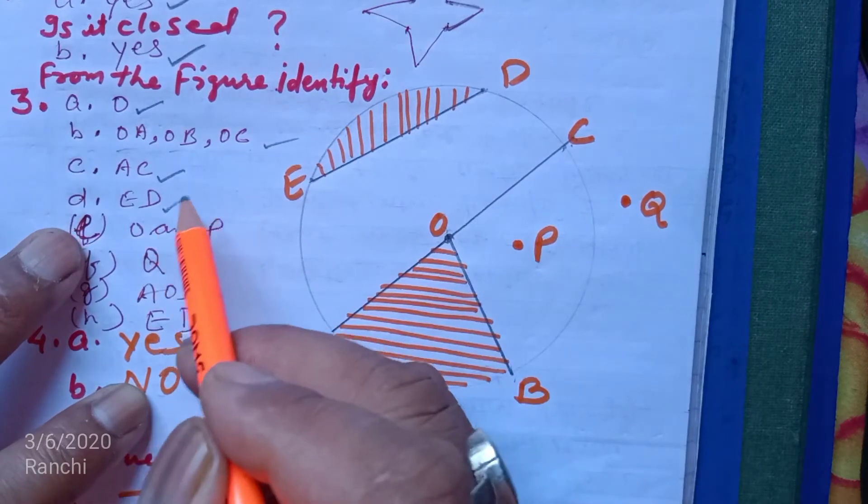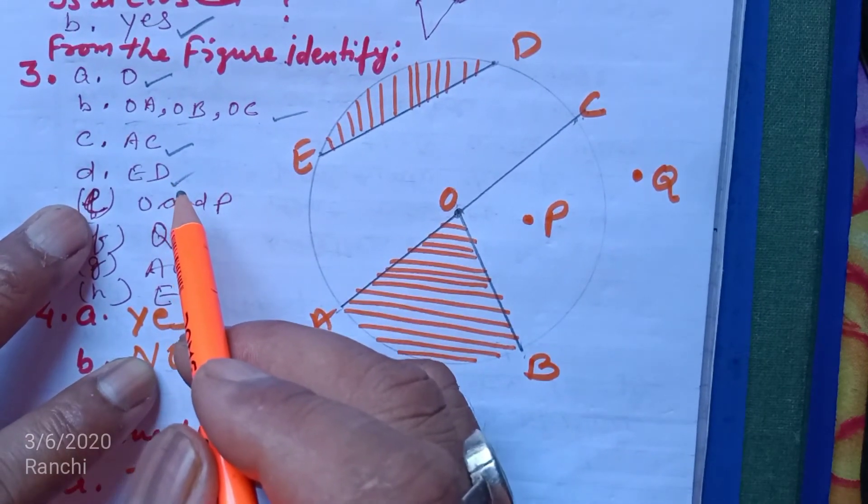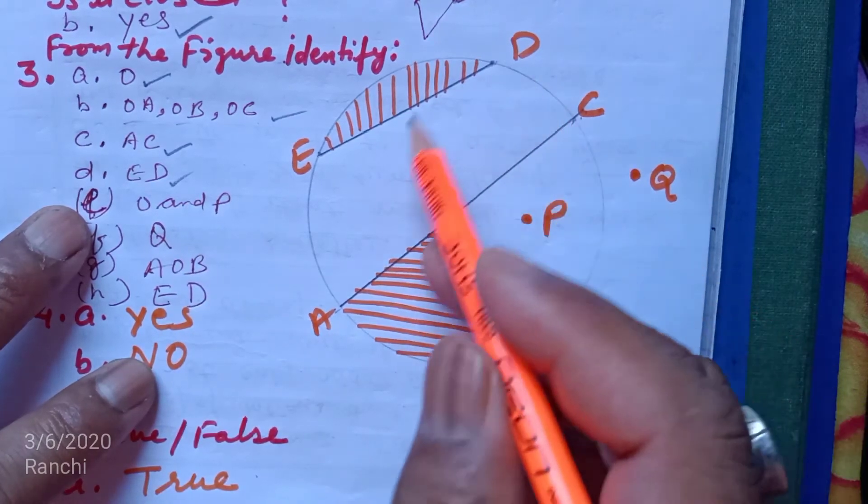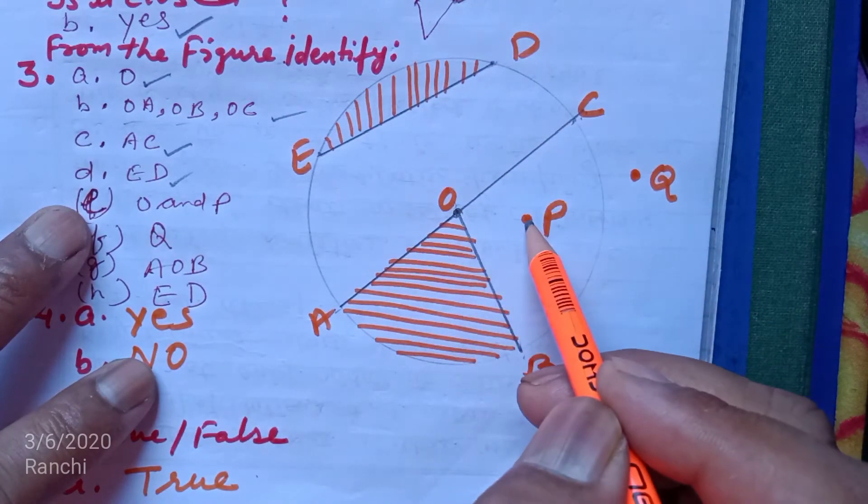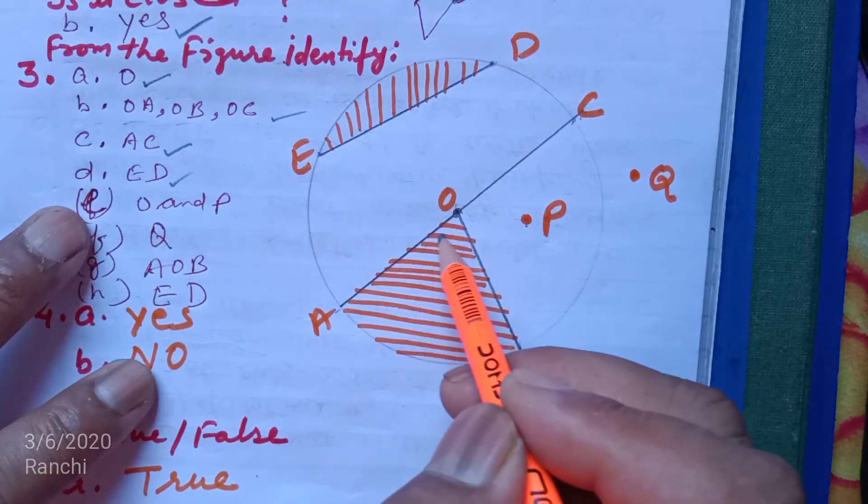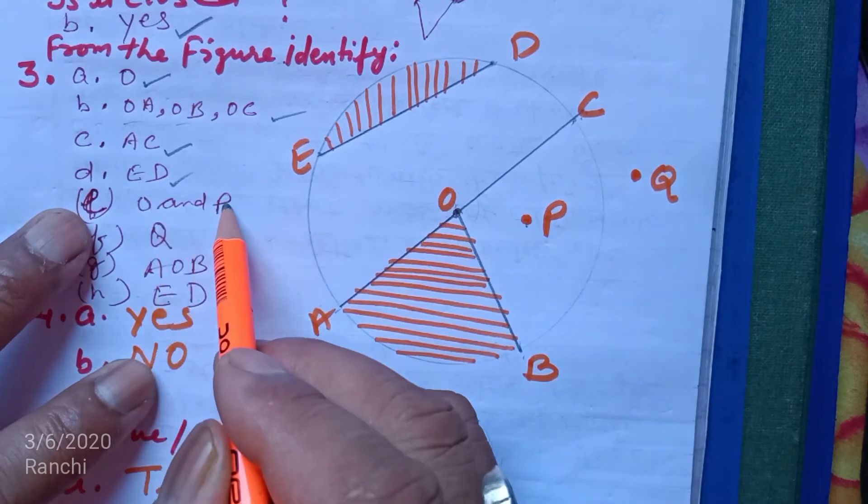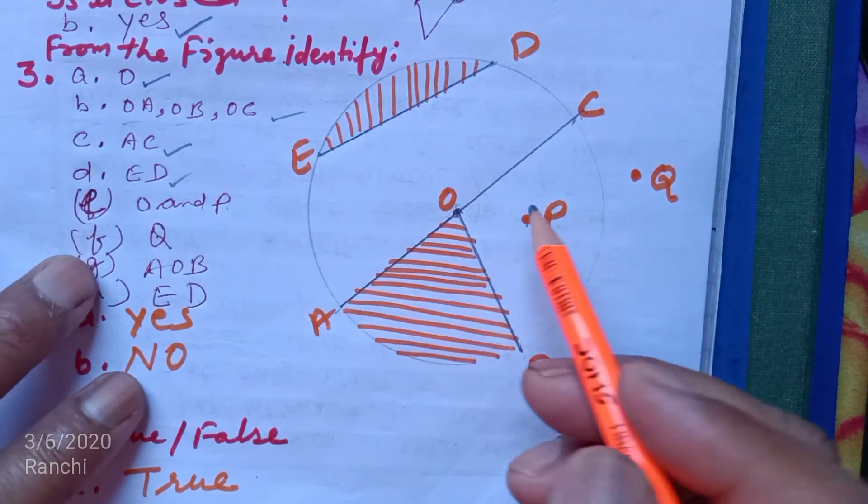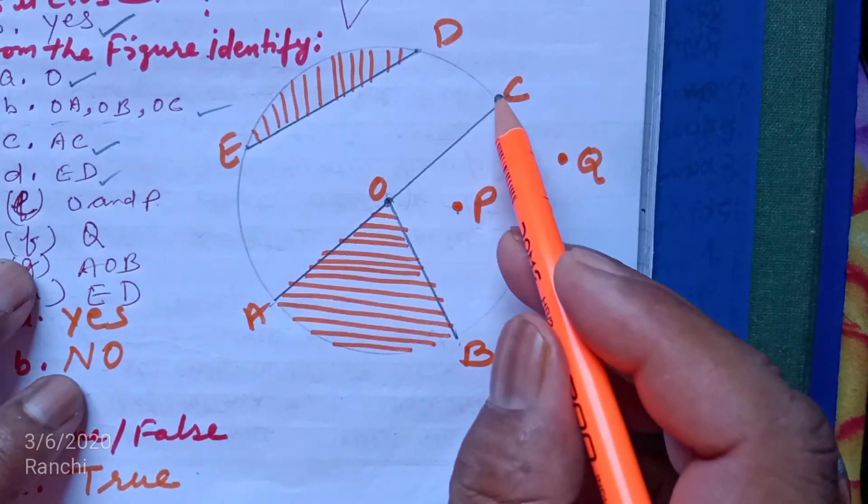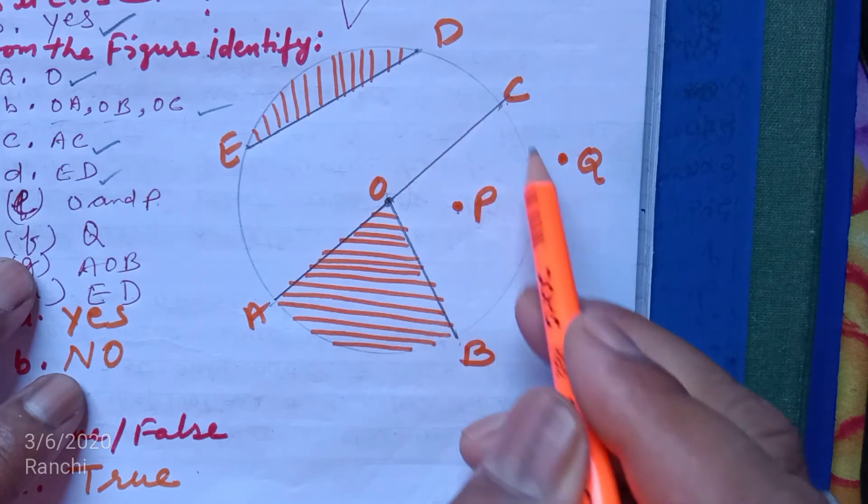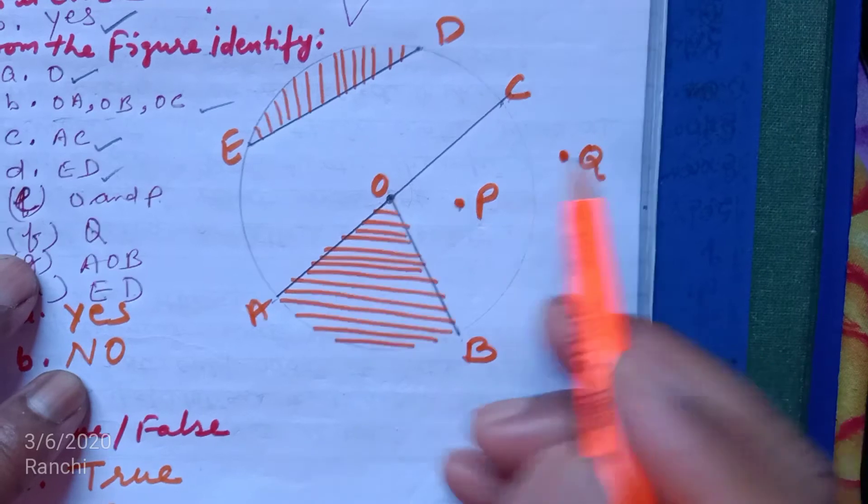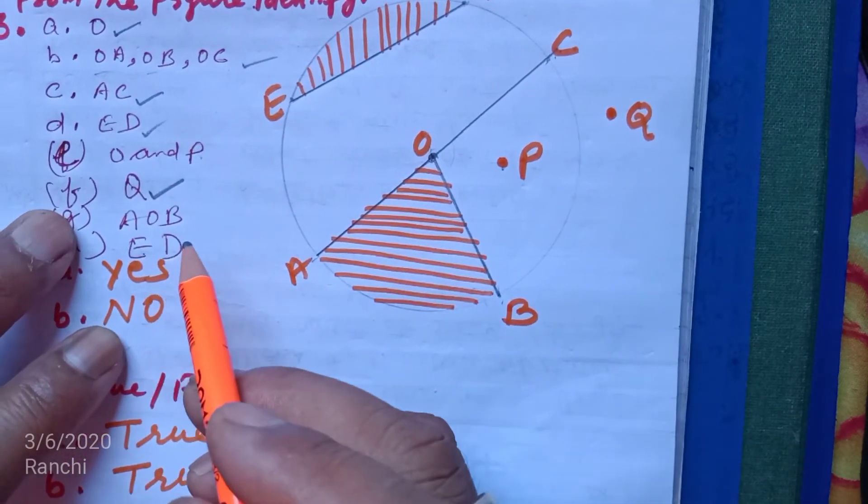Number E: two points in the interior. Interior means inside the circle. Points O and P are in the interior. Number F: point in the exterior. Exterior means outside the circle, beyond the circular boundary. Point Q is an exterior point.